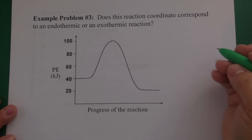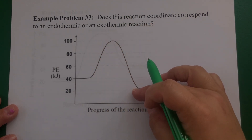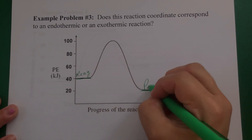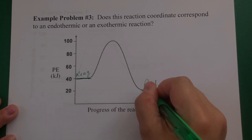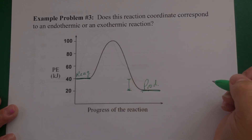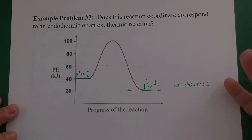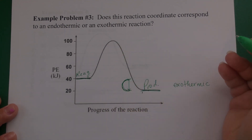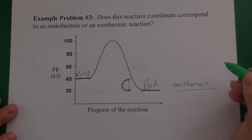Example problem: does this reaction coordinate correspond to an endothermic or exothermic reaction? We don't worry about the magnitude of the activation barrier — just look at the beginning and the end. The reagents have a higher energy content than the products. As it goes down to the product, it releases that excess energy — so this reaction is exothermic. Think of it like moving from a more expensive apartment to a cheaper one: you free up that extra income, just like the reaction frees up that energy.